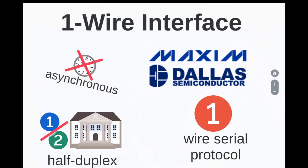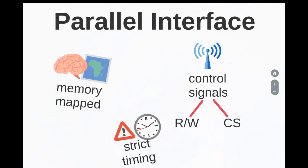The one-wire interface, developed by Maxim Dallas Semiconductor, is an asynchronous half-duplex communication protocol that uses only a single wire for communication and follows a master-slave communication model. One of the key features of the one-wire bus is that it allows power to be sent along the signal wire as well. The final onboard interface we discuss is the parallel interface, normally used for communicating with peripheral devices that are memory-mapped to the host system.